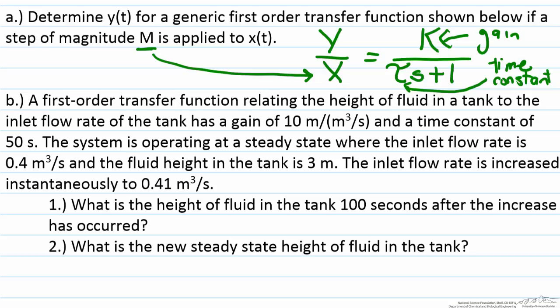Once we have done that we will use the answer for part a to allow us to assess the transfer function part b relating the height of fluid in a tank to the inlet flow rate. Part a is asking us to look at how a step function of magnitude m for our input variable x influences our output variable y.